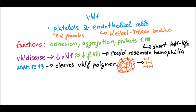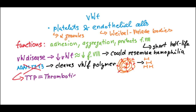We want a small, short von Willebrand's factor floating in our blood. There are people with decreased levels of this enzyme — it could be inherited or acquired — and the result is that their von Willebrand's factor is a huge polymer floating in the blood. Unfortunately, this triggers mainly thrombus formation, and this disease is called TTP, which stands for thrombotic thrombocytopenic purpura.